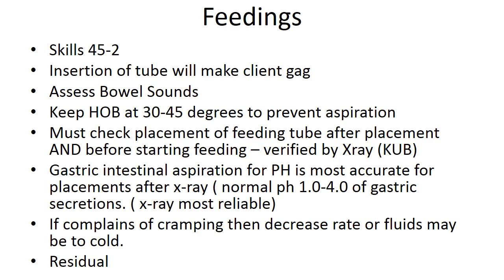Assess bowel sounds by listening in all four quadrants with the head of the bed at least 30 to 45 degrees to prevent aspiration. Check placement of the tube after placement and before starting every feeding. Placement is verified by x-ray — KUB (kidney, ureters, and bladder). Gastric aspiration for pH is the most accurate method after x-ray; normal pH of gastric contents is 1.0 to 4.0. Anything less than 7 is acidic; greater than 7 is alkaline. X-ray is the most reliable method for confirming tube placement.